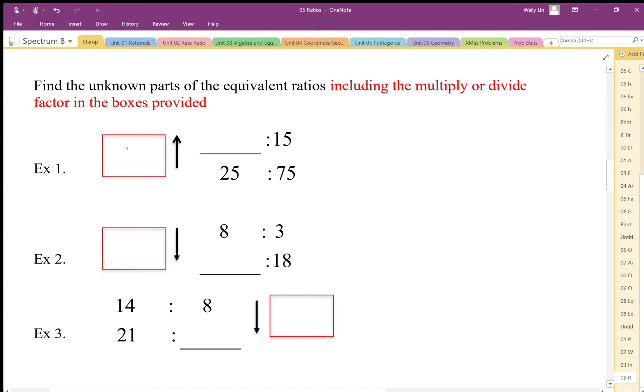Now since times 5 is going in this direction—or sorry, the opposite direction here—we can show this as a divide by 5. We can say that this is divided by 5 going in the opposite direction. So this direction we see it times 5, so the opposite direction should be divide by 5.